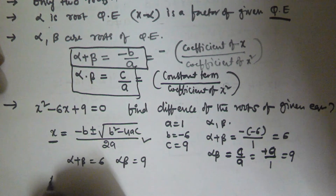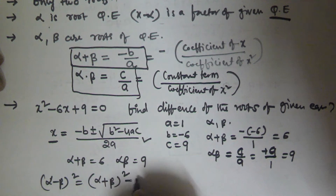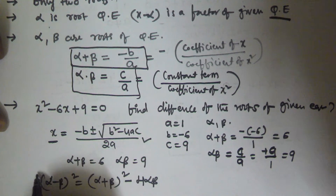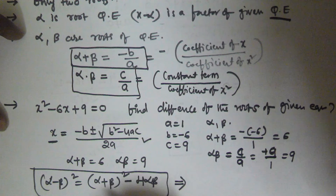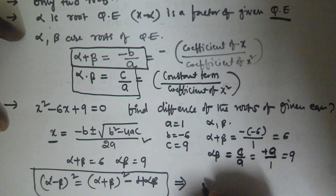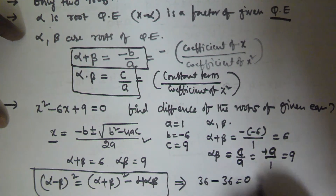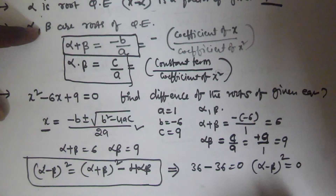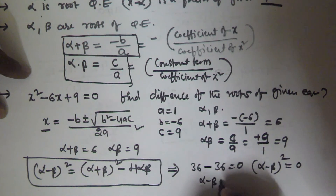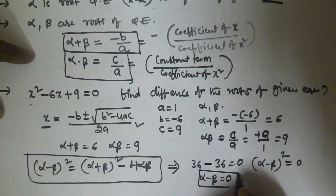Now we use the identity: (alpha minus beta)² = (alpha plus beta)² minus 4 times alpha times beta. Substituting the values: (alpha minus beta)² = 6² minus 4 times 9 = 36 minus 36 = 0. So (alpha minus beta)² equals 0, which means the difference of the roots of this equation is equal to 0.